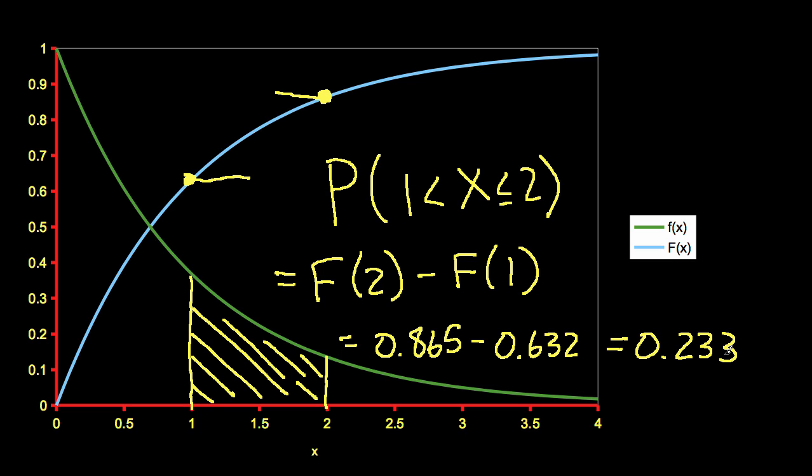So this pretty much concludes this video. The important concepts: we've introduced the probability density function and the cumulative distribution function, explained their relationship to each other, and shown how you can use the cumulative distribution function to find the probability that your random variable lies in an interval. Thanks for watching.